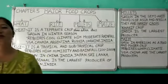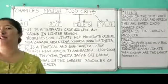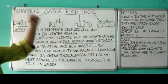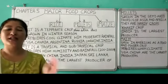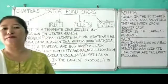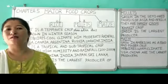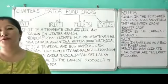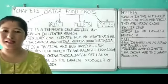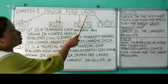Hello students, today we continue with the same chapter we started last class — chapter number five, major crops. In the previous class you learned about the difference between food crops and cash crops. Food crops are mostly meant for self-consumption and cash crops are meant for selling. Today we will take up only the major food crops grown in the world.